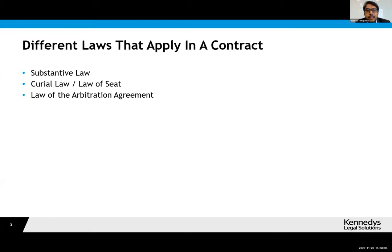The curial law, or the law of the seat, is the second law that can apply in a contract. That determines the procedural law for any arbitration. For instance, if you have a charter party saying English law, arbitration in Singapore, then Singapore is the law of the seat and Singapore law applies to the procedures around the arbitration. The third type of law — the subject of this case — is the law of the arbitration agreement. In quite a lot of contracts, you don't actually have an express choice of what law applies to the arbitration agreement specifically.